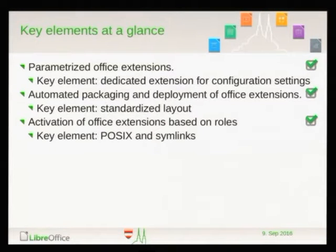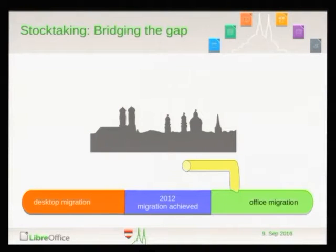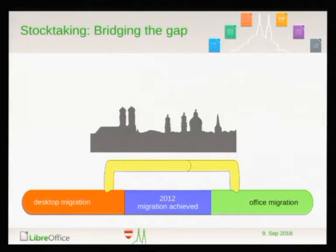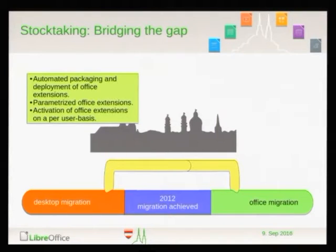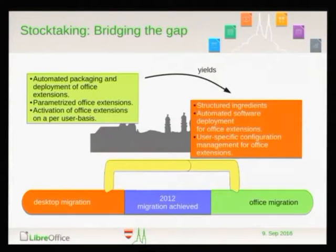This is how our user-specific configuration management for office extensions actually works. To conclude with a short stock-taking: this was our dangling link, and with this piece in the mosaic it is closed — migration achieved, finally. The key elements are: automated package and deployment, parameterized office extensions, and activation of office extensions on a per-user basis. With these in place, we get back all the benefits of our automated software deployment and also some standardization in our sources and extensions.